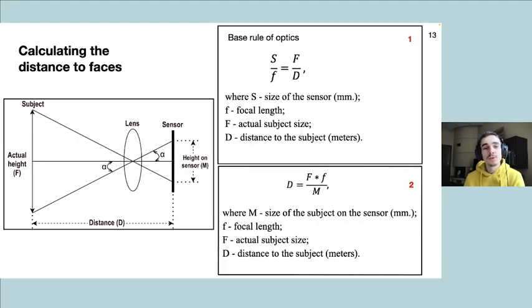Now, given we have retrieved the sensor size from the metadata and estimated the subject size, we can calculate the distance to that subject using the rule of optics.